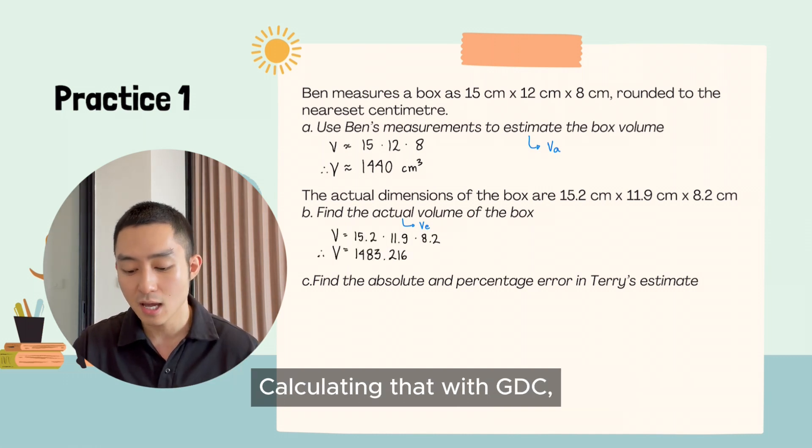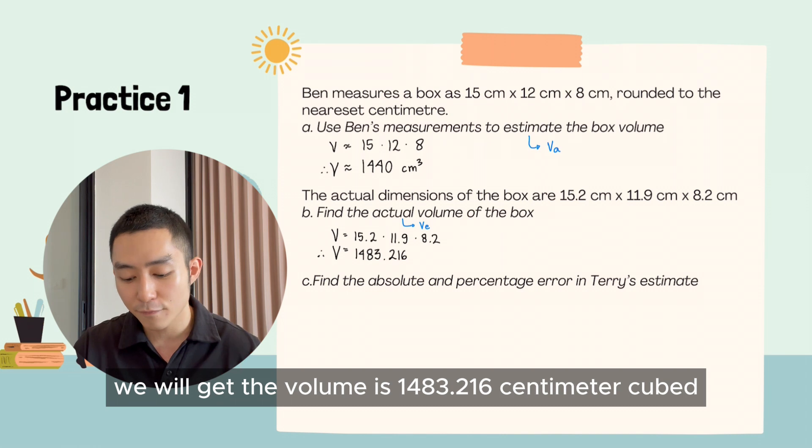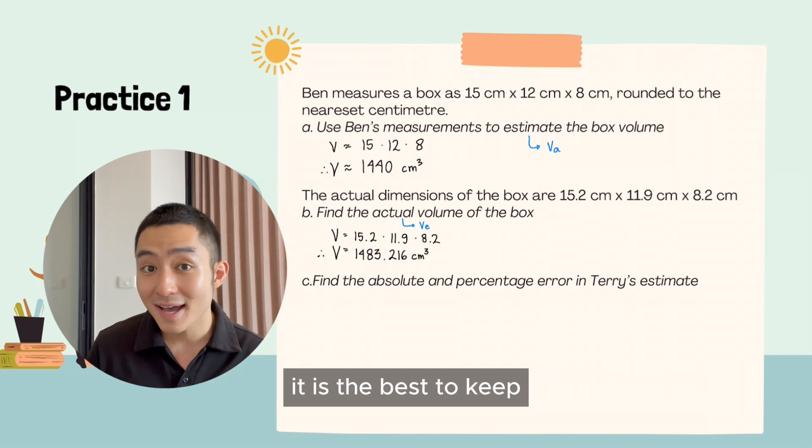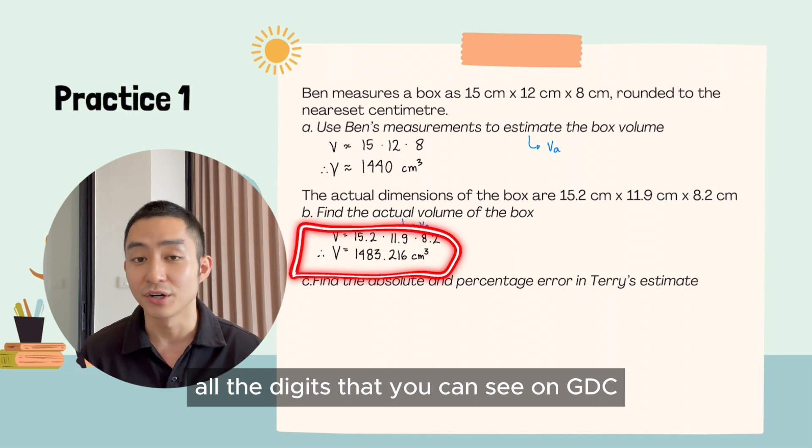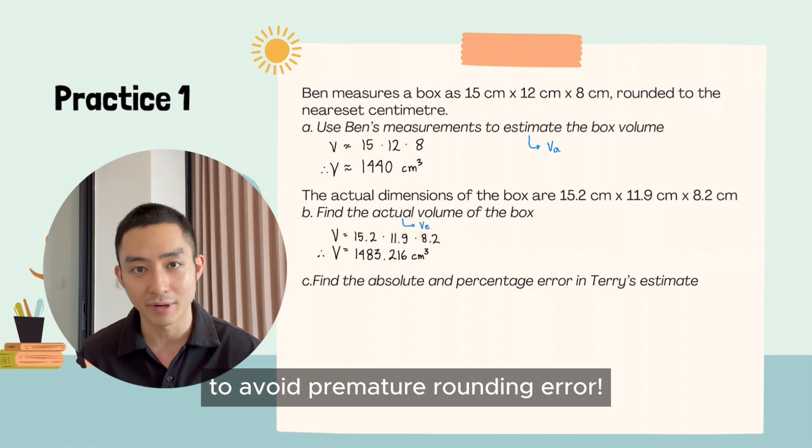Calculating that with GDC, we will get the volume is 1483.216 centimeter cubed. It is best to keep all the digits that you can see on GDC to avoid premature rounding error.